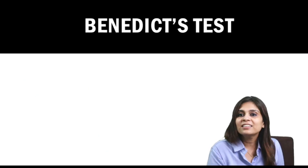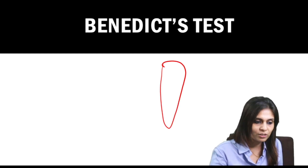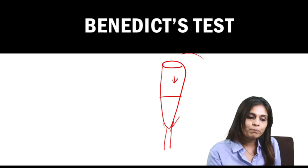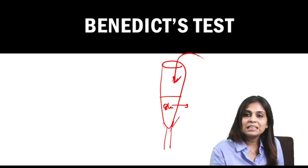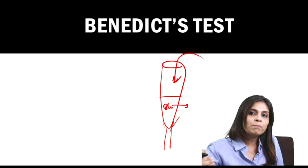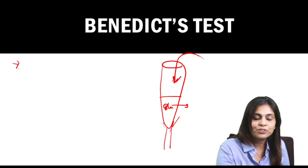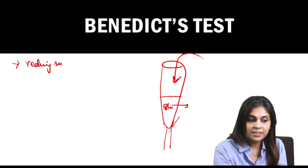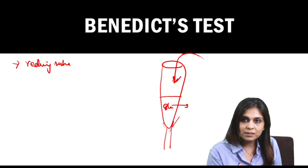Now about Benedict's test. Take 5 mL of Benedict's solution, add 8 drops of the solution to be tested, and heat it. If there is a reducing substance in the solution, you will observe a color change from blue to a series of colors — blue becomes green, then yellow, orange, or red, depending upon the concentration of the reducing substance. The key point: Benedict's test detects reducing substances, not just reducing sugars — any reducing substance will answer Benedict's test.